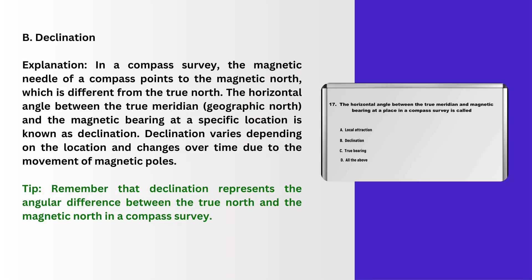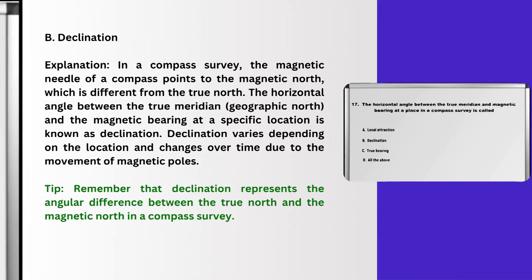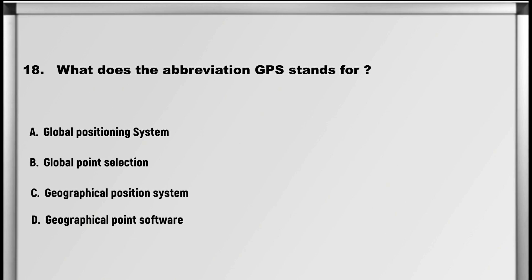Explanation: In a compass survey, the magnetic needle of a compass points to the magnetic north, which is different from the true north. The horizontal angle between the true meridian (geographic north) and the magnetic bearing at a specific location is known as declination. Declination varies depending on the location and changes over time due to the movement of magnetic poles. Tip: declination represents the angular difference between the true north and the magnetic north in a compass survey.